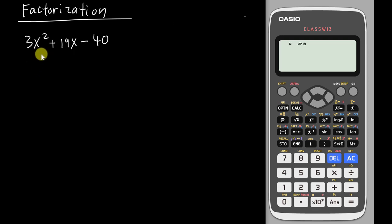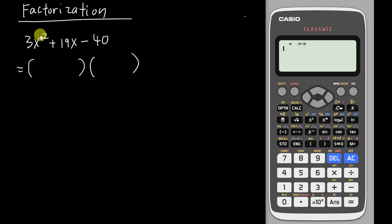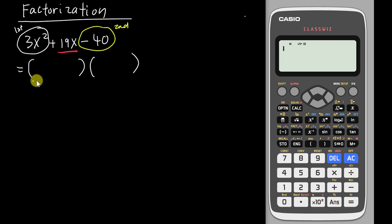For method number two, I'll straight away write two brackets. This is my own method, which is how I solve most factorization questions. First I focus on 3x squared — since both brackets multiply each other, I need something that multiplies to give 3x squared, which is 3x times x.